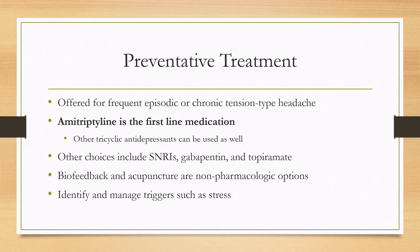For preventative treatment, this should be offered for frequent disabling episodic tension type headaches or chronic tension type headaches. Amitriptyline is considered the medication of choice and is first line. Sometimes other tricyclic antidepressants can be used. Other choices to consider include SNRIs, gabapentin, and topiramate.